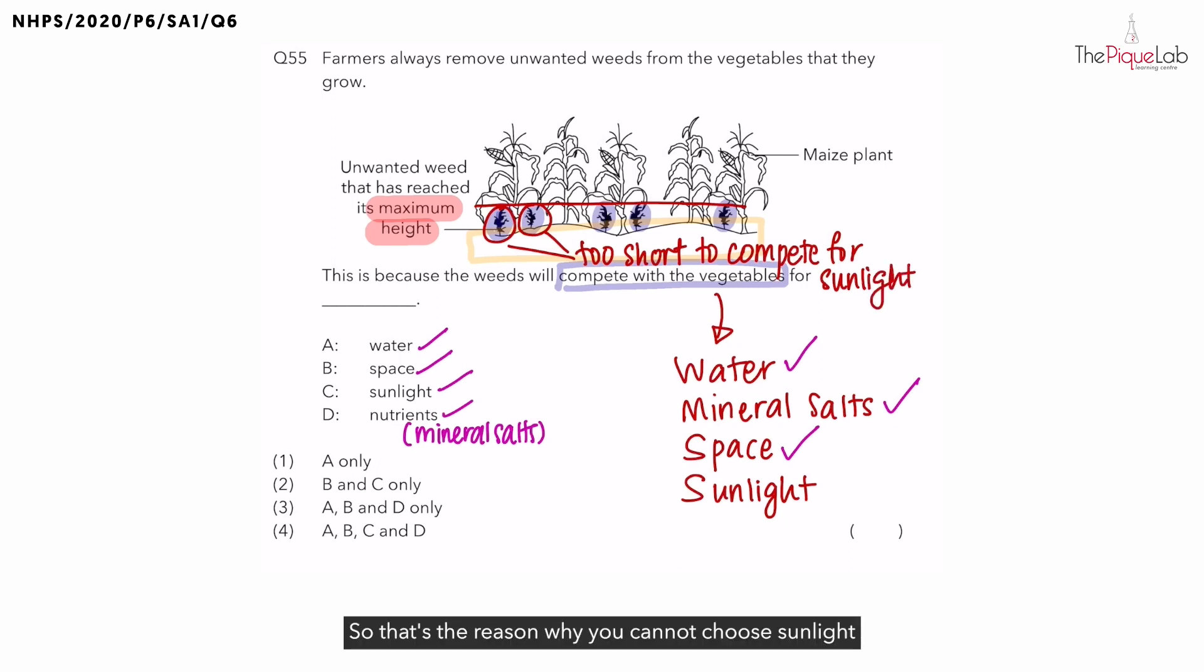So that's the reason why you cannot choose sunlight as your answer. And the only three things that the weeds are competing with the vegetables for are water, space, and nutrients, which is also known as mineral salts. That's why the answer for this question is A, B, and D, which is number three.